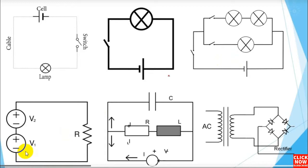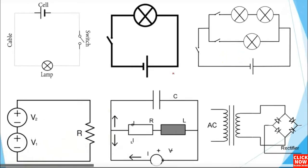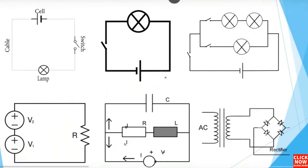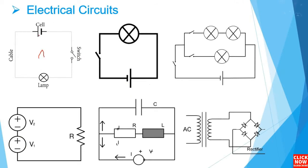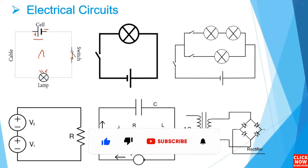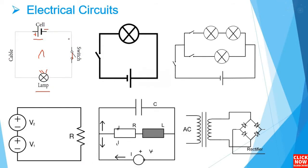Now let's see some electronic and electrical circuits. We're going to discuss these circuits in order to go deeper into understanding electronics. This is a basic circuit for beginners. The first circuit has cables, a cell or battery with plus and minus terminals, a switch, and a lamp. When the switch is closed, the current will pass through the switch and the lamp will be illuminated. This is the same simple circuit — a battery, a switch, and a lamp.